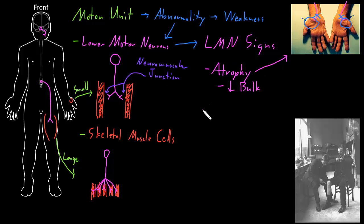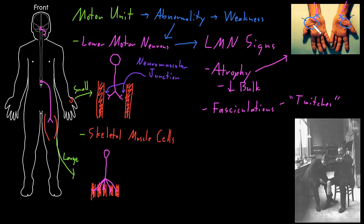The next lower motor neuron sign is called fasciculations — involuntary twitches of skeletal muscle that can occur after some problem with the lower motor neurons. In areas with atrophy of skeletal muscle, you would see little twitches of the muscle visible through the skin. The occasional fasciculation is normal — everybody gets a little muscle twitch now and then. But with abnormalities of the lower motor neurons, the affected muscles will often have lots of twitching going on for a very long period of time, specifically in those muscles that are affected. If we see a lot of fasciculations in one spot, that suggests there could be a problem with those lower motor neurons.